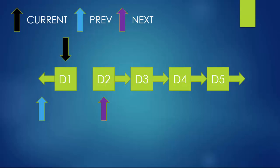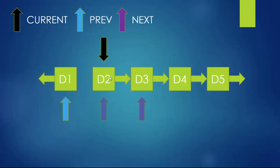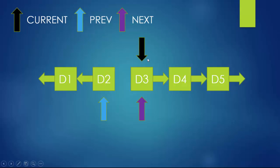This pointer flip is one of the most significant steps. After flipping d1's pointer, prev should now point to d1, so you update prev to whatever current is pointing to. Then you increment current by setting it to whatever next is pointing to. This series of steps repeats for every node. For d2: next becomes current->next (which is d3), then d2's pointer is flipped to point to prev (d1), then prev advances to d2 and current advances.